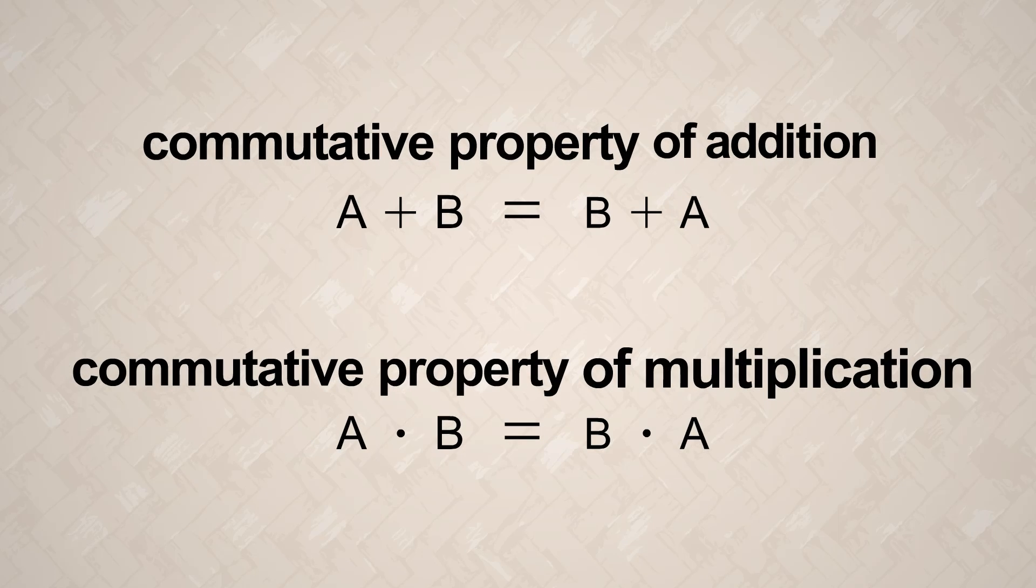So two or more numbers which are multiplied can be reordered in any way without affecting the result. As we saw in the previous lecture, the same holds true for numbers which are added. Addition and multiplication are both commutative.